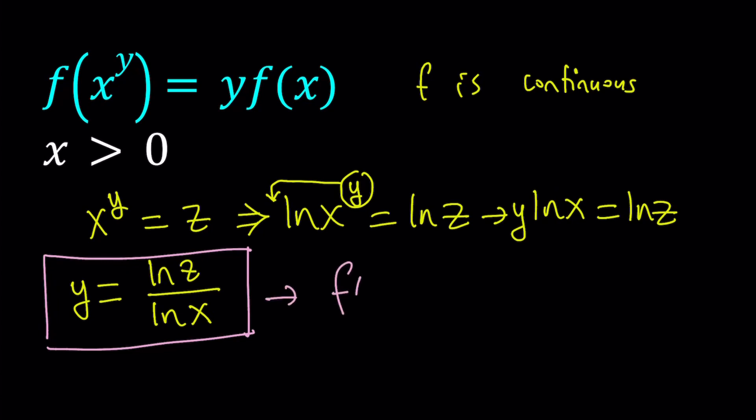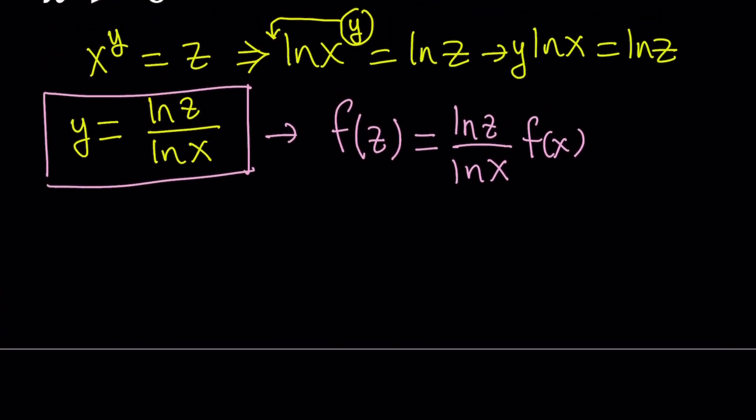Replace x to the power y with z, so it becomes f of z equals y will be replaced with ln z over ln x, and f of x is just going to stay the same. So we have this interesting equation.